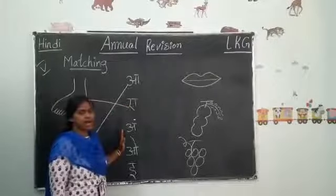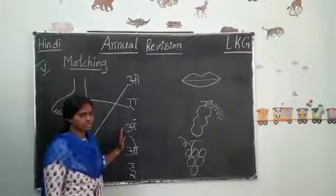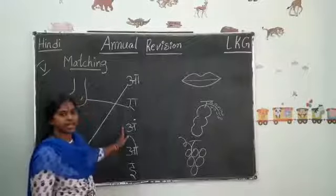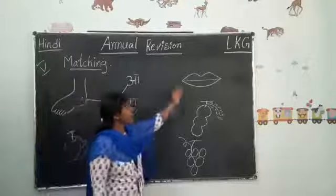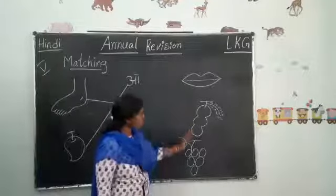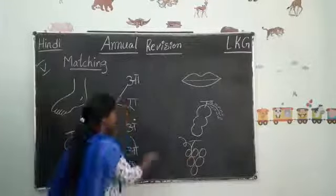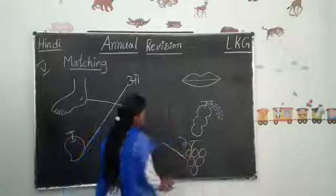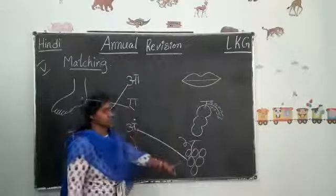Now next Am. Am say Angu. Angu means grapes, no? Where are grapes? Look here. Is this? No. These are grapes. So match it. Draw a line. Come to grapes.